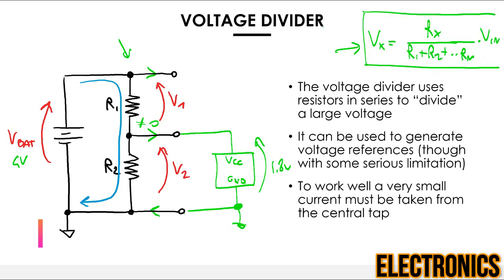The current needed by chips — especially digital ones — keeps changing rapidly, going from zero when idle to a high value during switching operations. This causes variable voltage across v2, making it very hard to guarantee that the voltage stays at the desired 1.8 volts.